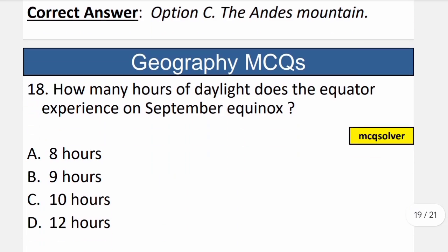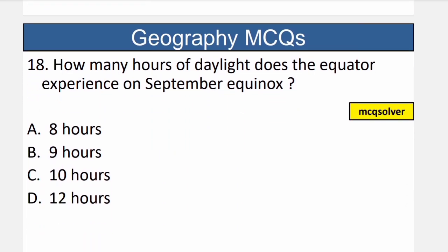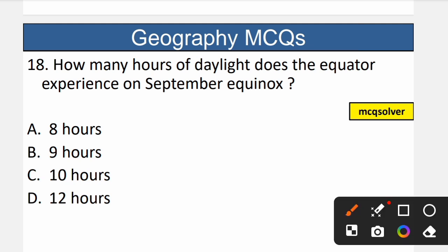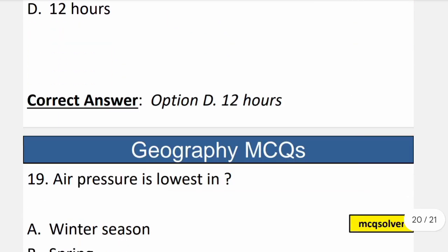Question number 18: How many hours of daylight does the equator experience on the September equinox? During an equinox, the sun is directly over the equator and there are equal hours of day and night — 12 hours each. So the daylight at the equator on the September equinox is 12 hours. The correct option is D — 12 hours.